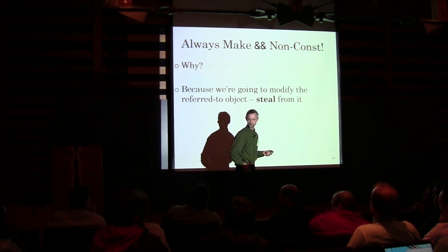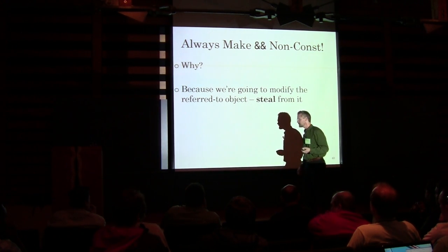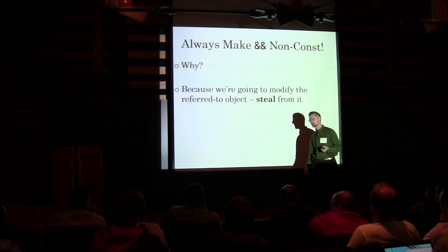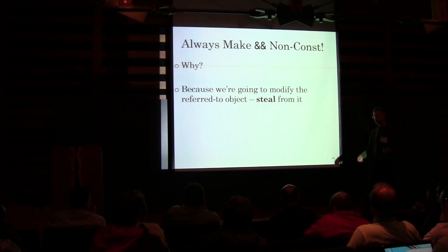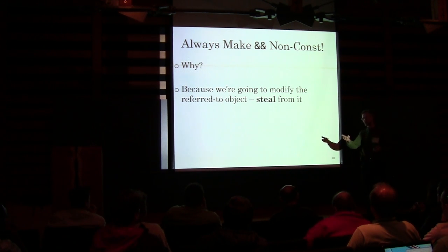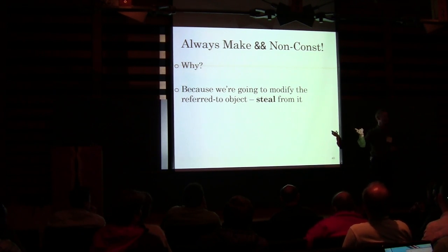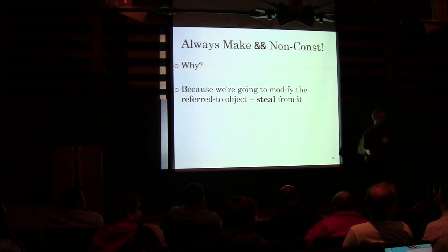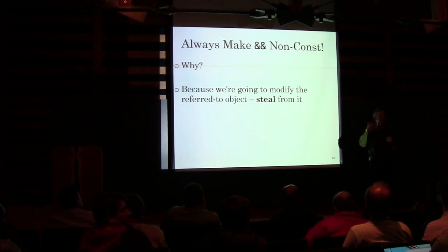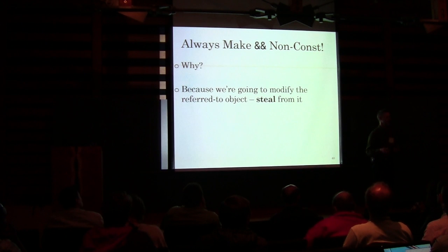What does a const R-value reference conceptually mean? It means that it's an R-value reference and you're not going to be able to do the work you want to do. Because if it's const, then you can't steal from it. You've got this R-value reference in your hand and all you can do is look at it and say, 'that's a lovely R-value reference.' But as soon as it's non-const, then you can turn it into a zombie. You can declare it as const — there's nothing in the standard that prevents it — it just won't do you any good. Kind of pointless.